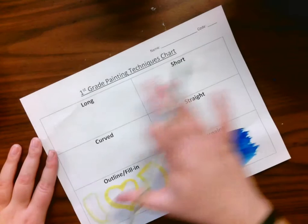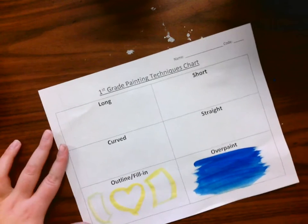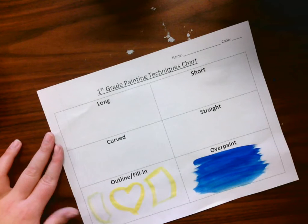So now we're going to go back up here, we're going to do long, short, curved, and straight. This is talking about different types of line style.